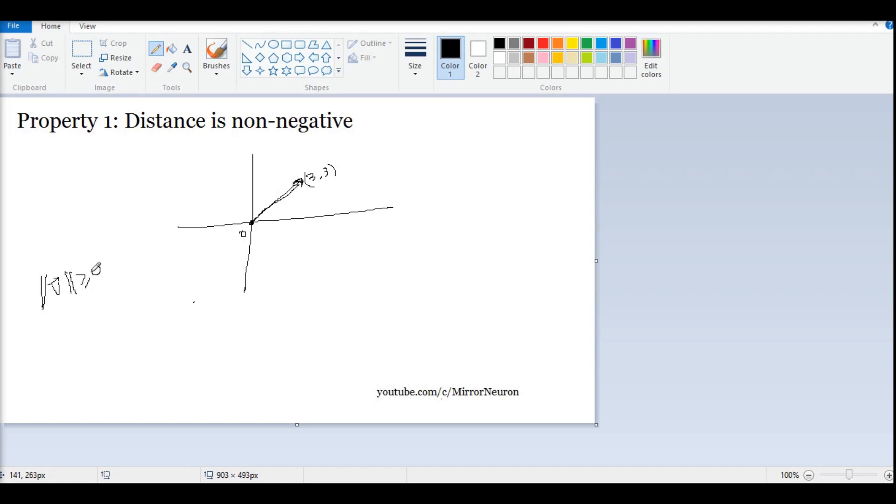So norms are given by two vertical lines. So if my vector is V, then the first property says that it has to be at least greater than equal to zero. That is the first property, that it is written between, mathematically it is written between two double vertical lines, and it should be greater than equal to zero. That is the first property. So distance should be non-negative.